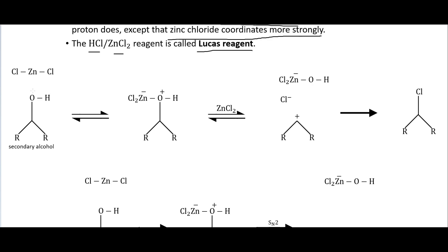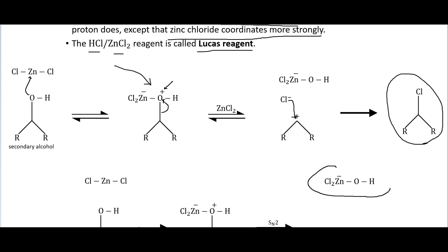The mechanism with the Lucas reagent: our alcohol attacks the zinc chloride to form a complex with a positive charge on the oxygen. This can then leave in an SN1-type reaction to generate a carbocation. The chloride then bonds to that carbocation, giving us the chlorinated product while the zinc-containing species leaves.